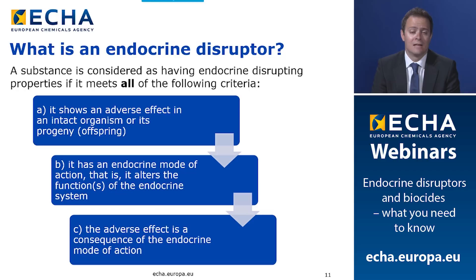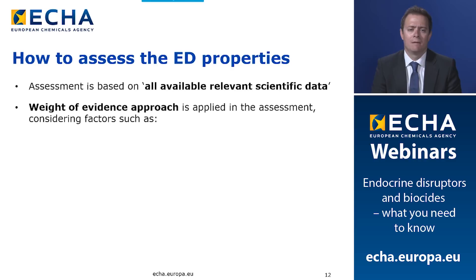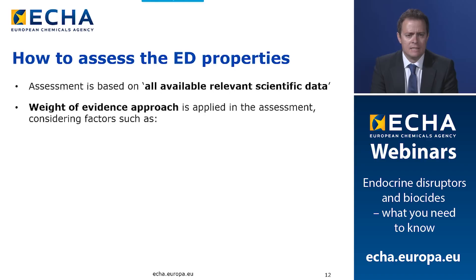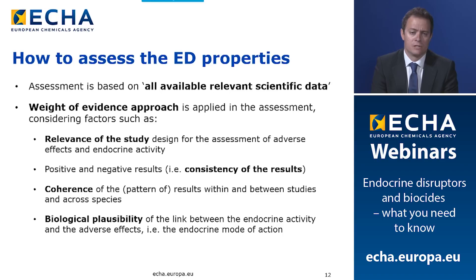How to assess the properties? The endocrine disruptor criteria establishes that the assessment must be based on all available relevant scientific data — including data generated before the new criteria became available. All information must be assessed within a weight of evidence approach, considering factors such as relevance of the study, consistency and coherence of results between studies and across species, and biological plausibility of the link between the endocrine activity and the adverse effect.